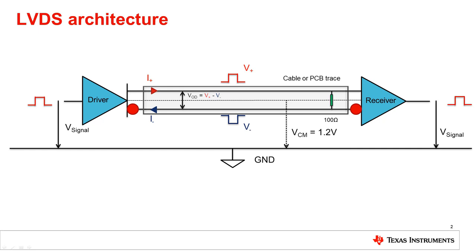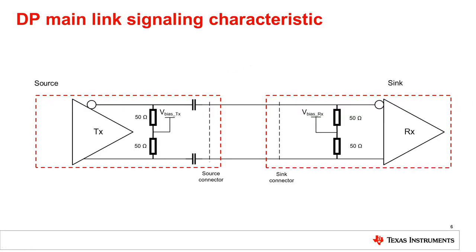AC coupling can be used to isolate drivers and receivers that require different common mode voltages. Speaking of AC coupling, if you've watched our previous TIPL video on DisplayPort, then this architecture should look familiar to you. DisplayPort's physical layer is just AC coupled LVDS.